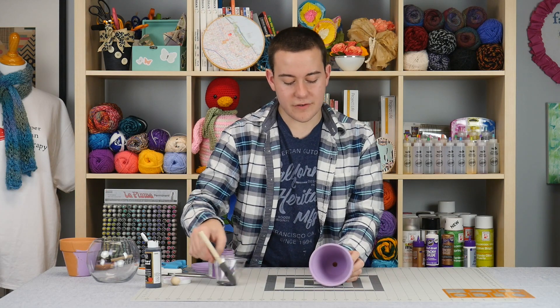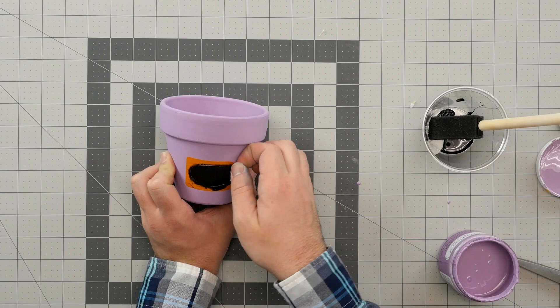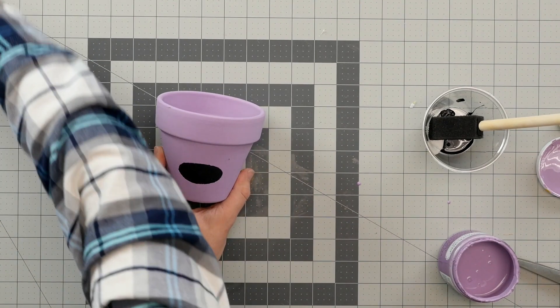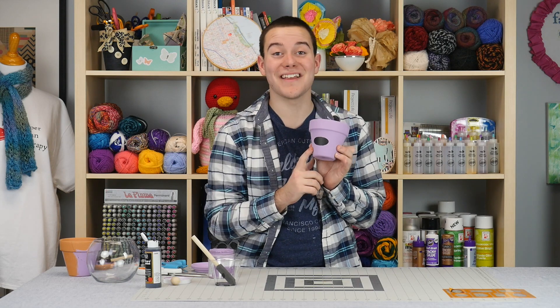Alright, so now after you're finished, you want to remove your stencil and you can take it over to a sink and wash it off and you can apply it back onto your piece. Then after it's finished and dry, it'll look something like this.